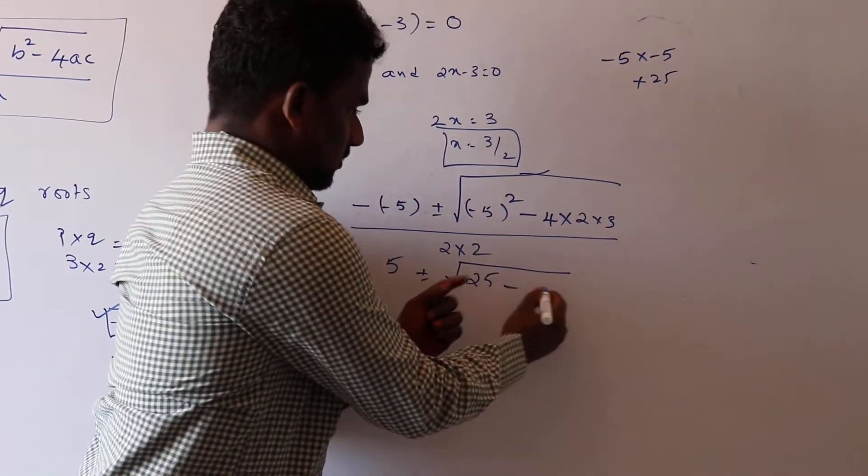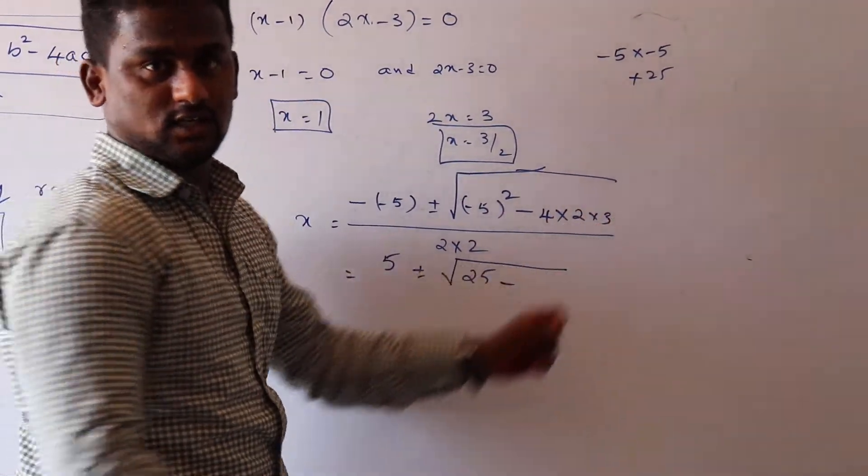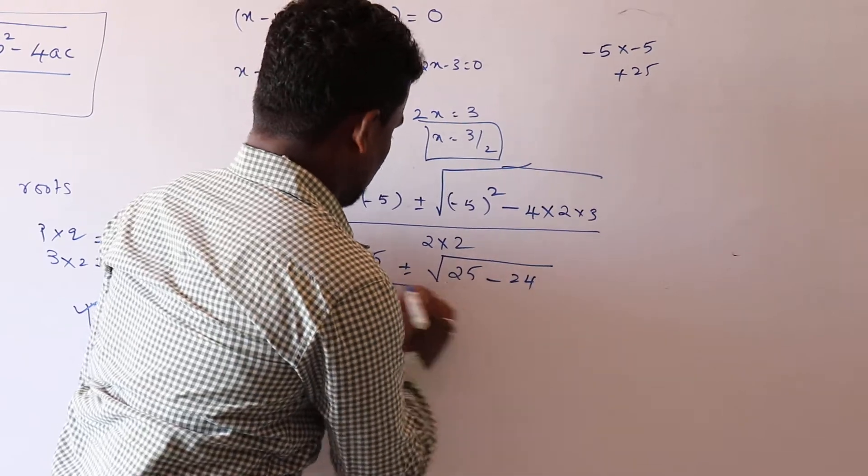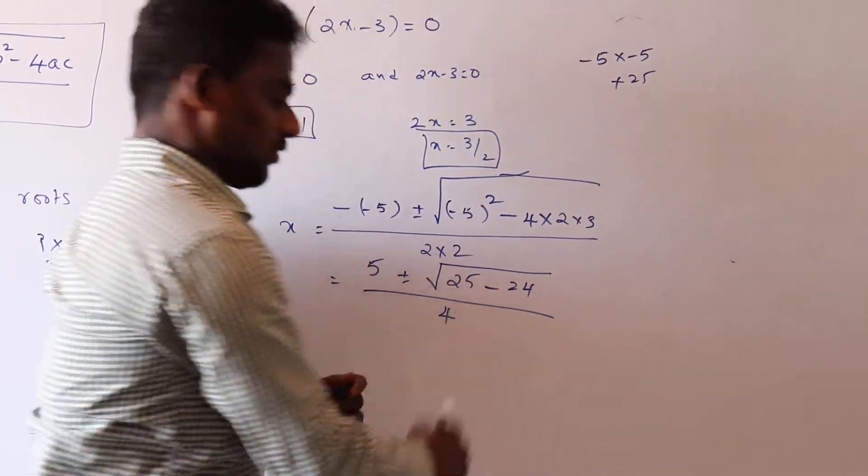Minus 4 to the 8, 8 to the 24, 24 divided by 2 into 2, 4, 2 into 2, 4.